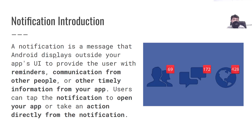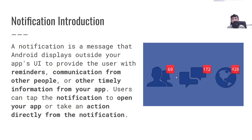Let's start with the definition. A notification is a message that displays things like reminders, communication from others, or timely information from your apps. When you click on a notification, it will open the app or directly take some sort of action from the notification drawer.